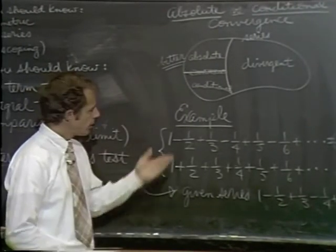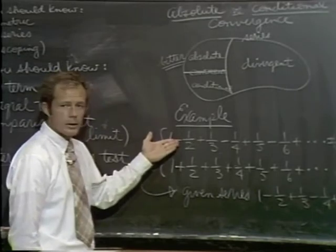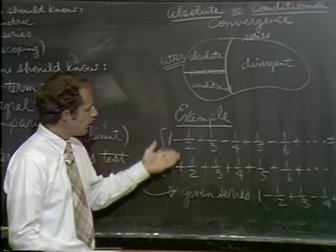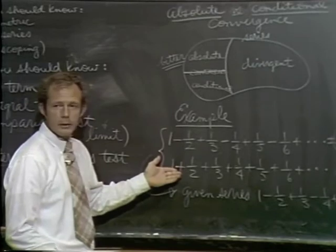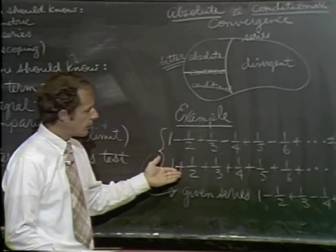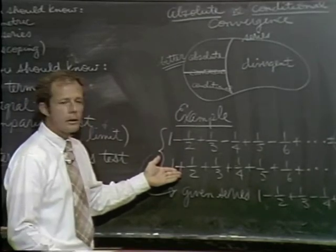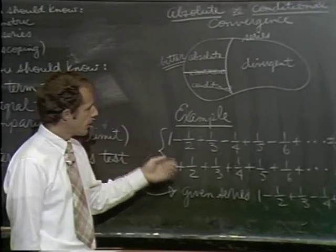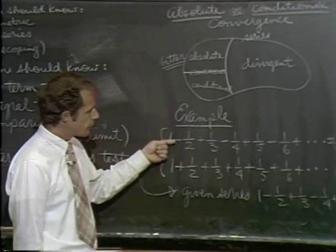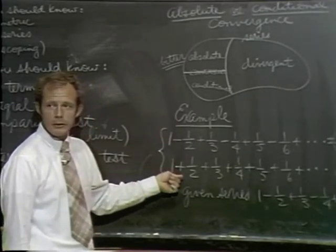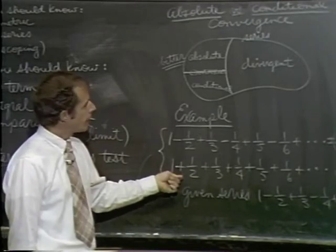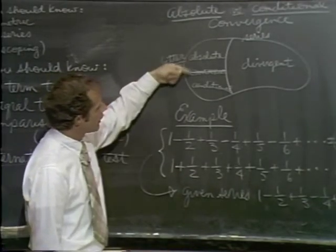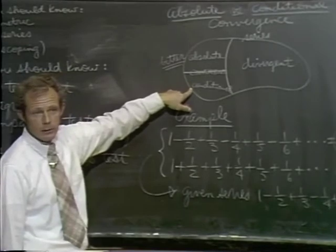Here's the given series. We know it converges by the alternating series test. You get rid of all the negative signs, and now it's a positive series — that series diverges. So it converges, but it doesn't converge with absolute value signs thrown in. Therefore it doesn't fall into the absolutely convergent region; it has to fall into the conditionally convergent region.